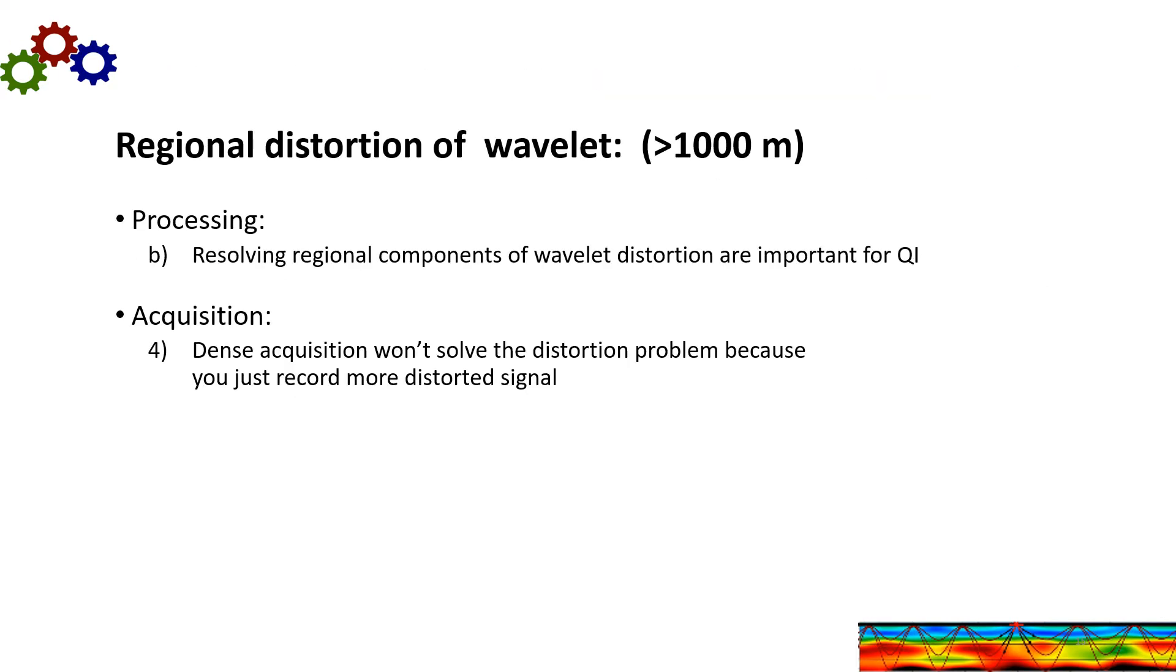The regional distortion of the wavelet is important. And by regional, I mean distortion that is consistent over a thousand meters or larger. And the problem with this large consistency is that it does not stack out. So these regional components are for quantitative interpretation. And dense acquisition won't solve this regional distortion problem because you just record more distorted signal.